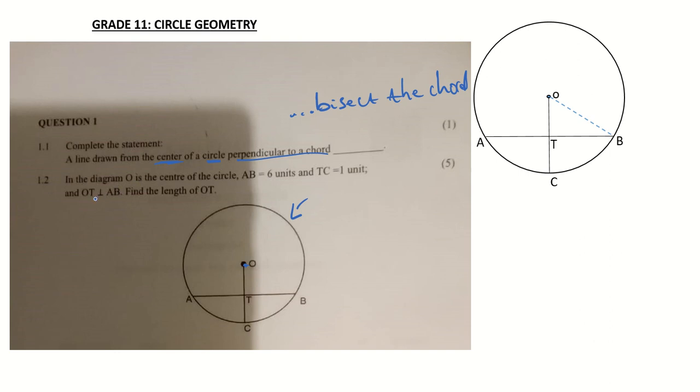Then in 1.2 it says O is the center of the circle, AB is 6 units, TC is 1 unit, and OT is perpendicular to AB, so that is a 90 degree angle. We must find the length of OT.